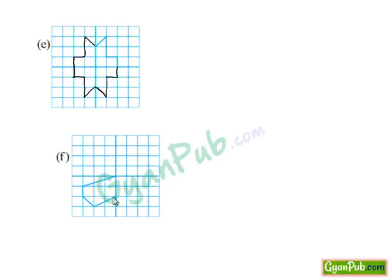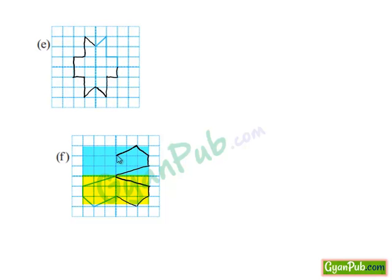Moving on to part F, here is the part of the closed figure and the two dotted lines are given. Taking the vertical axis, let's draw its mirror image to the right side. Now we have half of the image, and as the horizontal dotted line is the line of symmetry, we reflect this half object above the horizontal line to get the total image. Through the horizontal line, the object is symmetrical — the line divides the closed figure identically — and through the vertical axis also, it divides the closed figure identically.